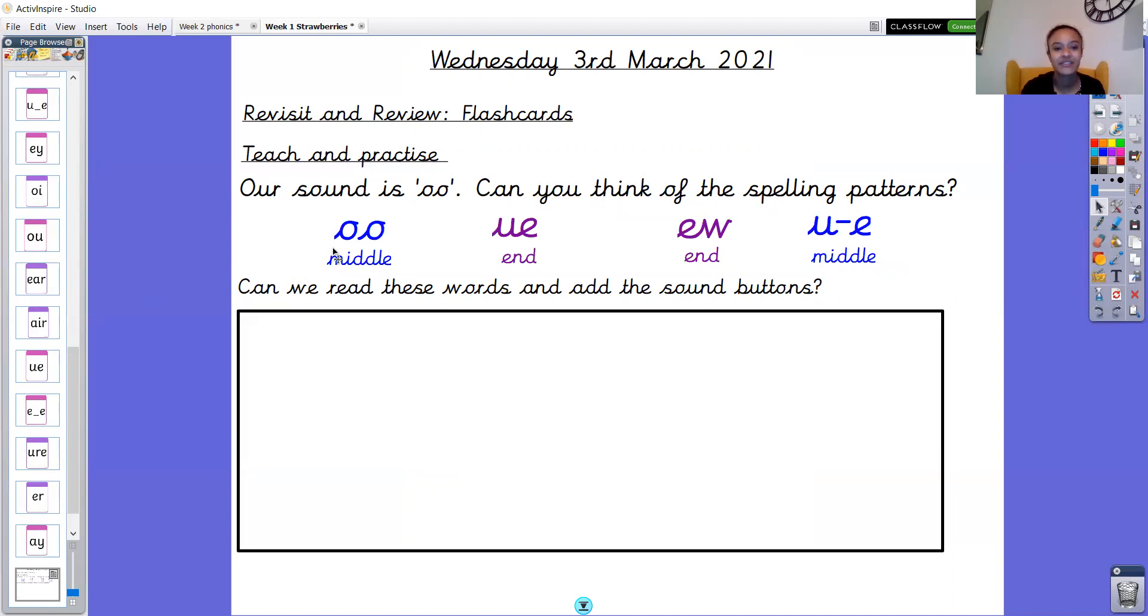Good job. Okay, so we have OO which makes a U or an OO sound, we call it the long or the short OO, don't we? We have UE which can make the U or the OO sound, we have EW which can also make the U or the OO sound, then we have the UE split diagraph which can make the U or the OO sound, and the E usually makes the U say its name.